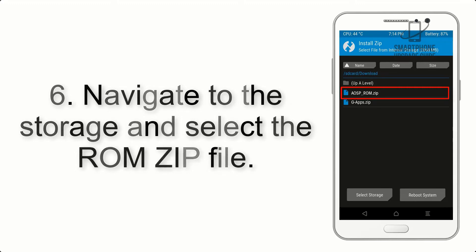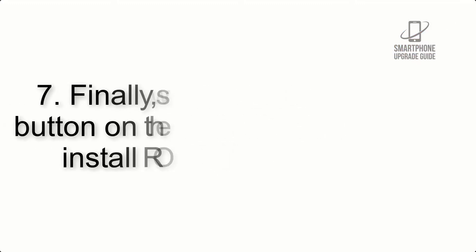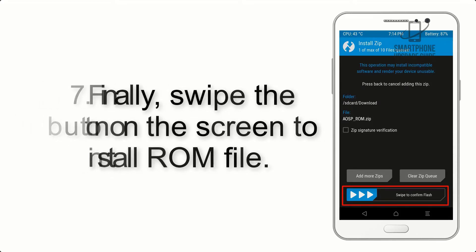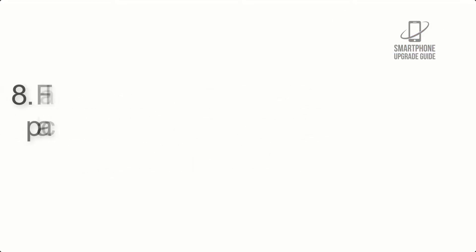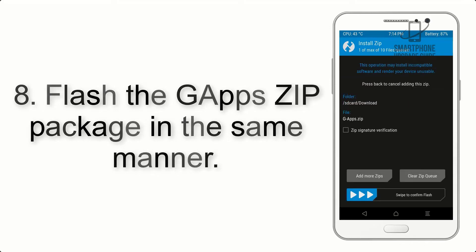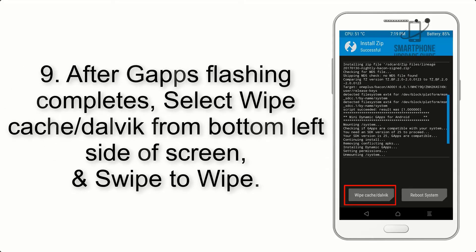Step 5: Go back to the recovery main screen and tap on the Install button. Step 6: Navigate to the storage and select the ROM zip file. Step 7: Finally, swipe the button on the screen to install the ROM file.